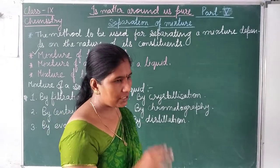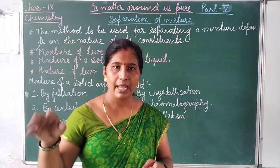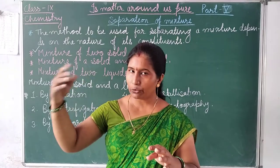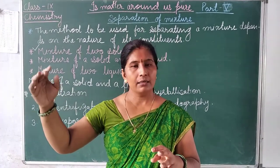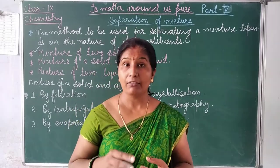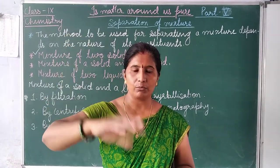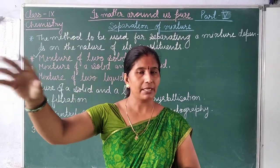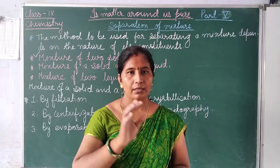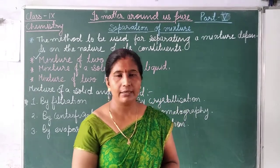Next is distillation. Distillation is a method in which the liquid is converted into vapour form, and then after cooling, the vapour converts back into liquid form. In distillation, we take a mixture and apply evaporation so that the liquid becomes vapour. Then we collect the vapour and decrease its temperature, causing the vapour to convert back into its liquid form. This process is known as distillation. This completes the methods to separate a solid from a liquid.